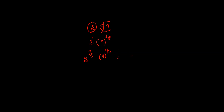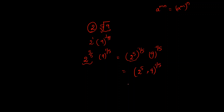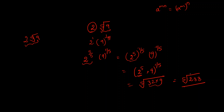This can be written as 2 to the power 5, whole to the power 1 by 5, using the exponent rule: a to the power mn equals a to the power m, whole to the power n. We then have 9 to the power 1 by 5, and since both terms share the exponent 1 by 5, we combine them: 2 to the power 5 times 9, all to the power 1 by 5 — the fifth root. Since 2 to the power 5 is 32, this becomes the fifth root of 32 times 9 which equals 288. So 2 times the fifth root of 9 equals the fifth root of 288, a pure surd with no coefficient.